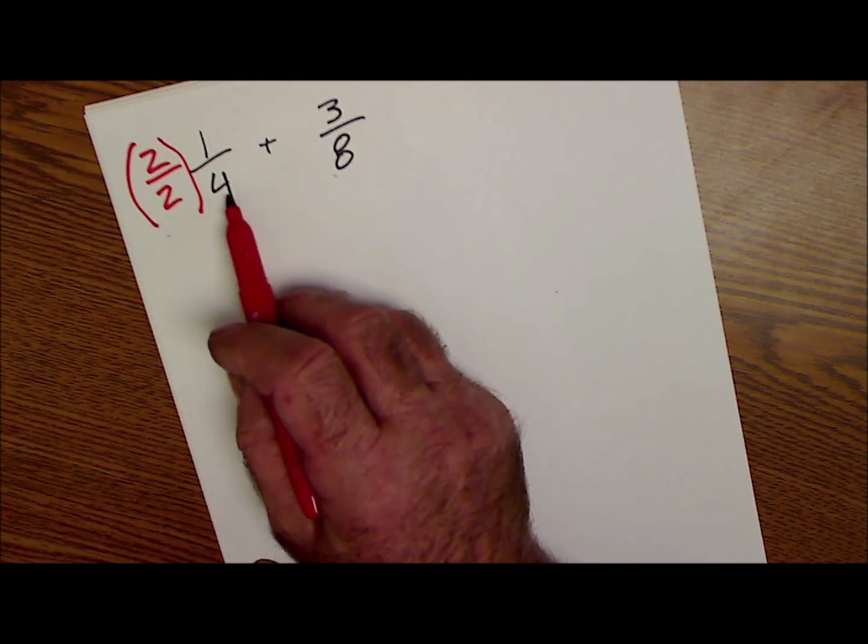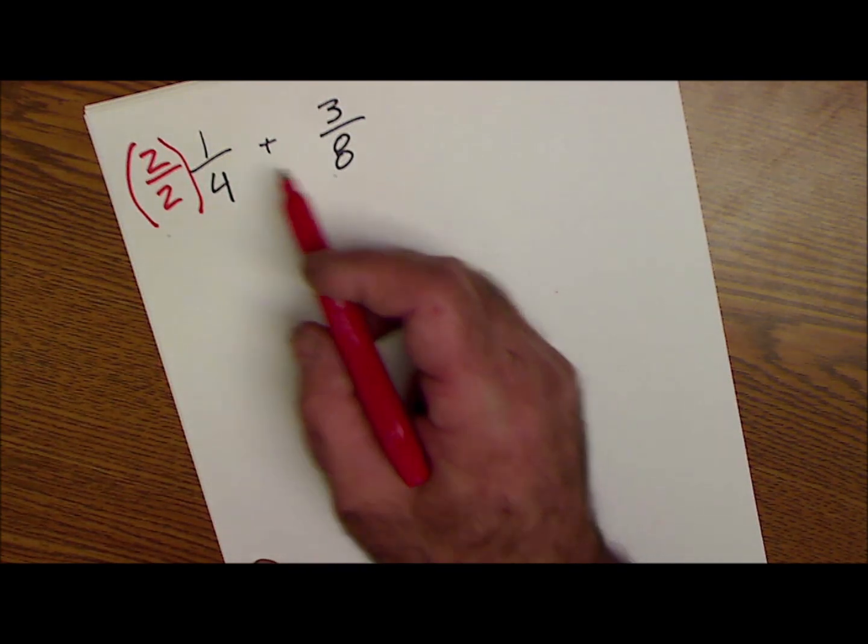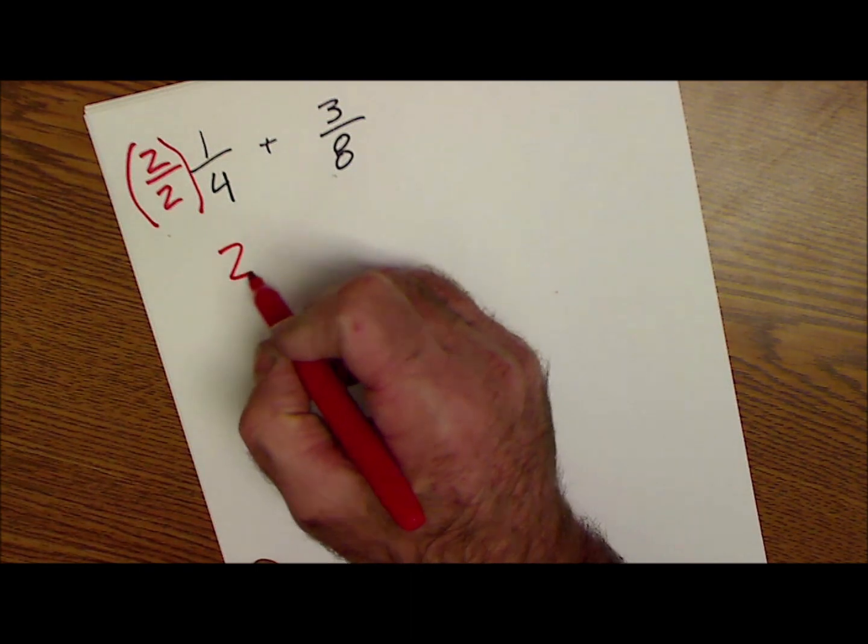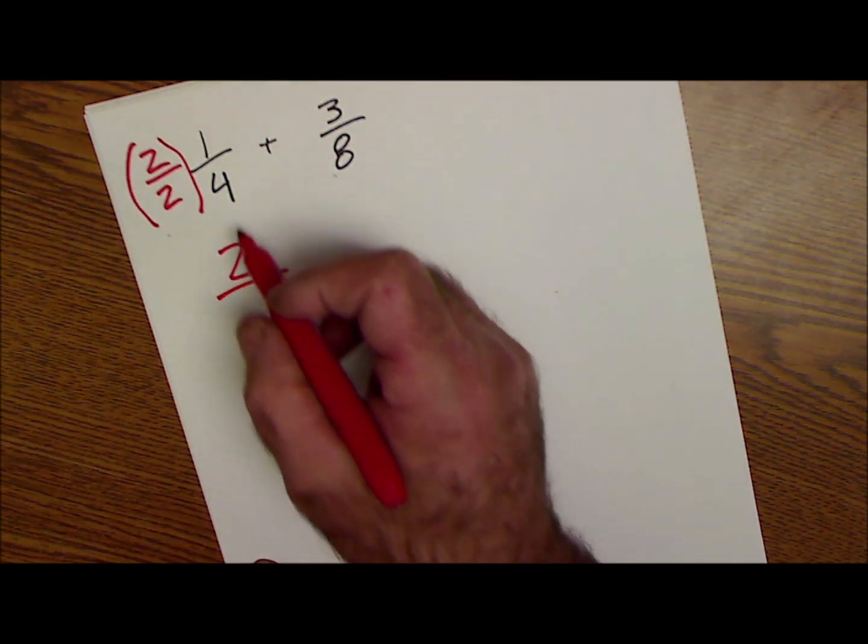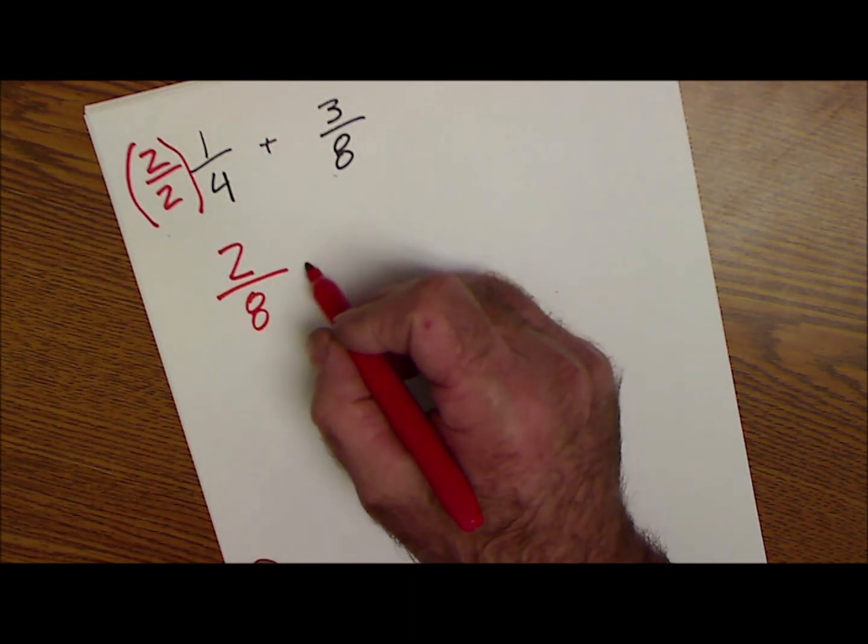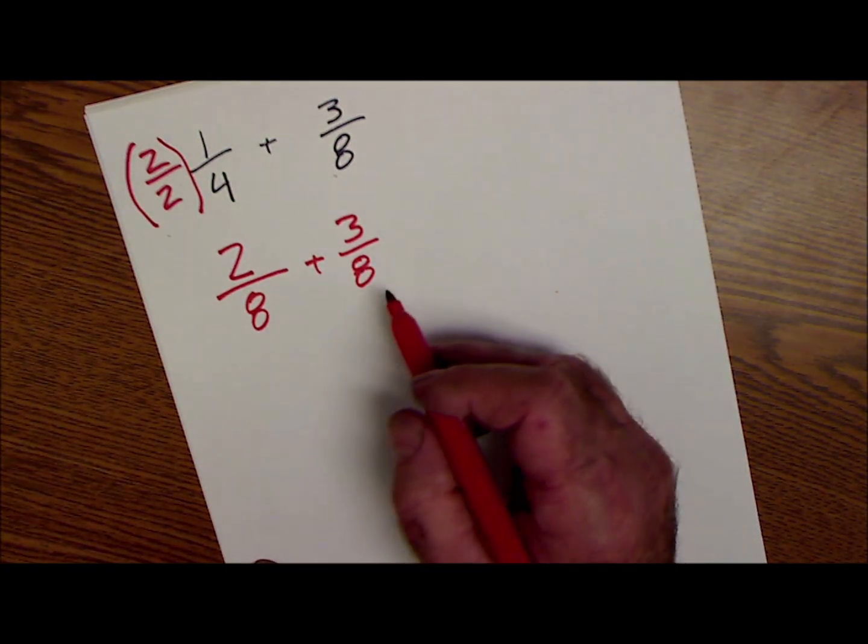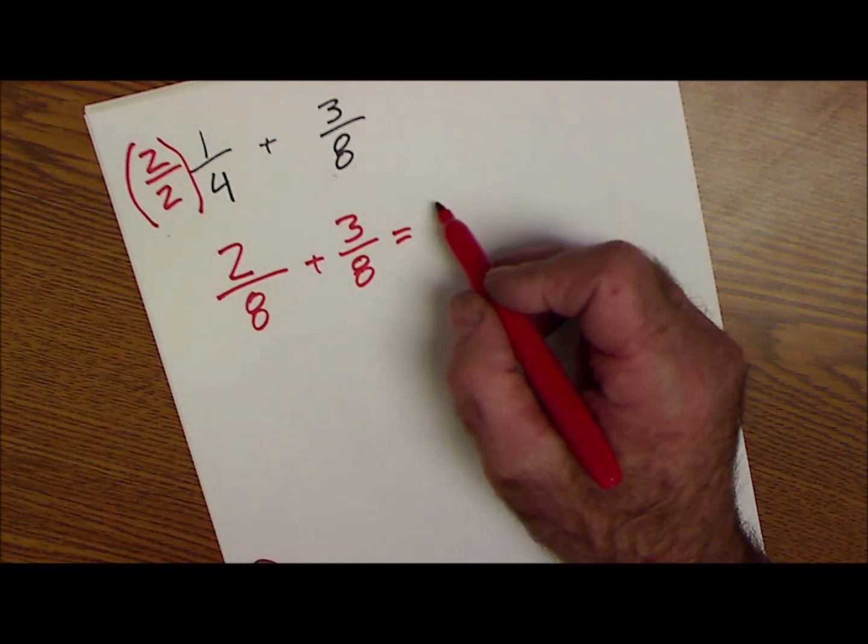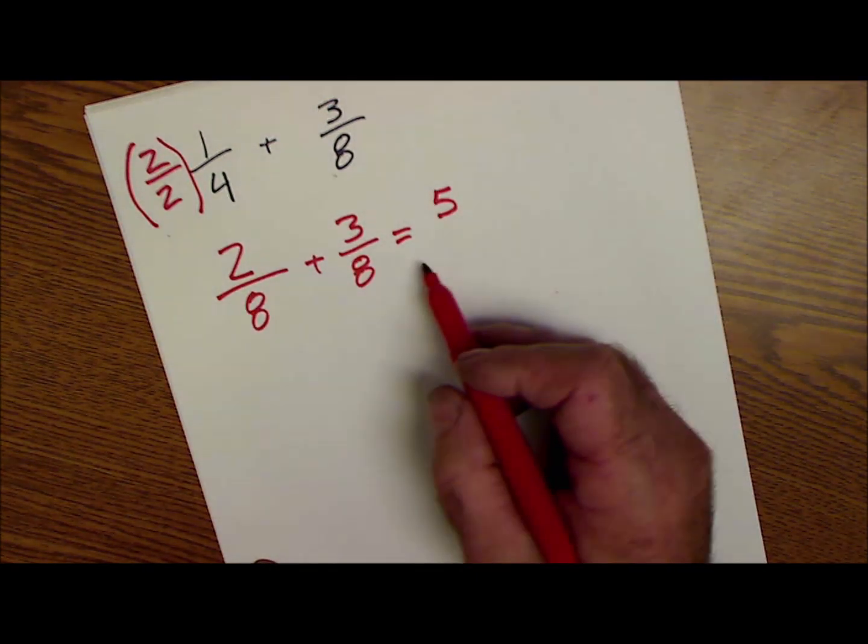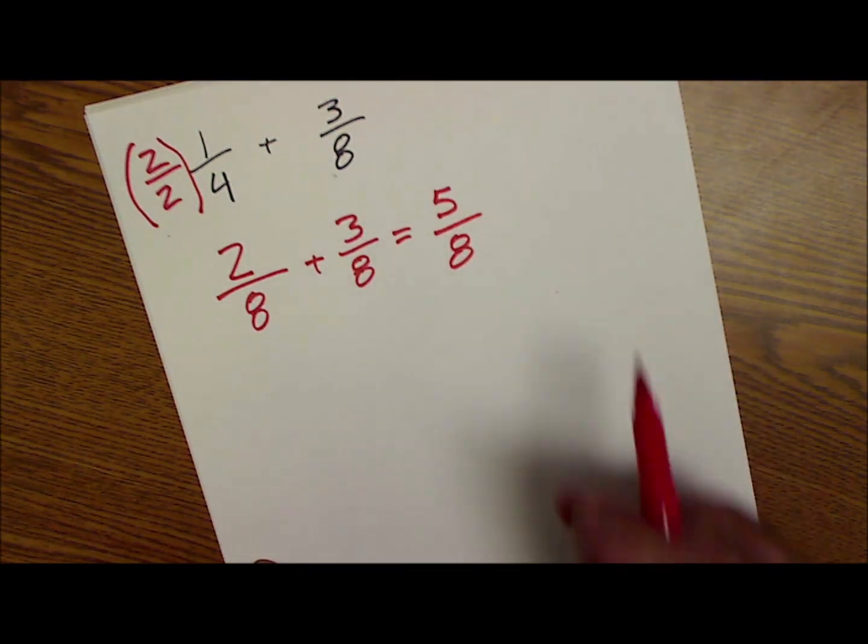The reason I picked two is that's what I have to multiply four by to get to eight. So I multiply the top by two, multiply the bottom by two. Now I have two-eighths plus three-eighths. Now I have that common number in the bottom, a common denominator. I add across the top, five, and I keep the bottom number the same, five-eighths.